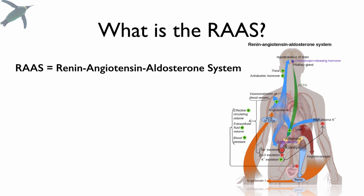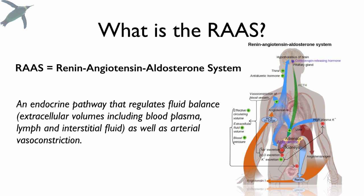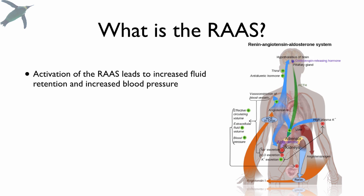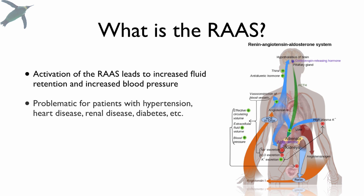What is the RAS? It is the renin-angiotensin-aldosterone system. It is an endocrine pathway that regulates fluid balance — we're talking about all kinds of extracellular fluids all over the body: the blood plasma, the lymph, interstitial fluid — and also arterial vasoconstriction. So it is a major player in regulating blood pressure. When the RAS system is activated, you get increased fluid retention as well as vasoconstriction, and both of those things will increase blood pressure.